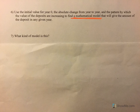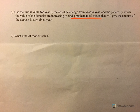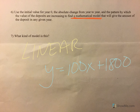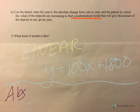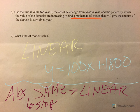So how can we find a mathematical model? Look at what we just did: we have an unknown value, 100 times that unknown value plus 1,800. If we put Y in front and X for the unknown, we have a linear model: Y equals 100X plus 1,800, where X is the number of years and Y is the total investment. So if absolute change is the same, you have a linear model, and that absolute change is your slope — the reoccurring change of $100 every time.